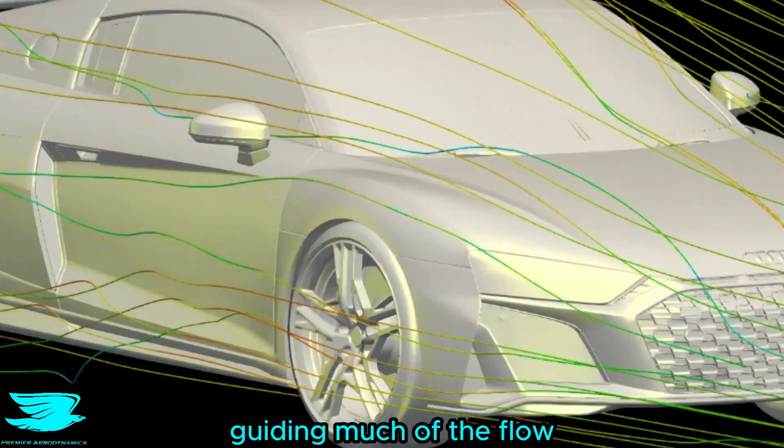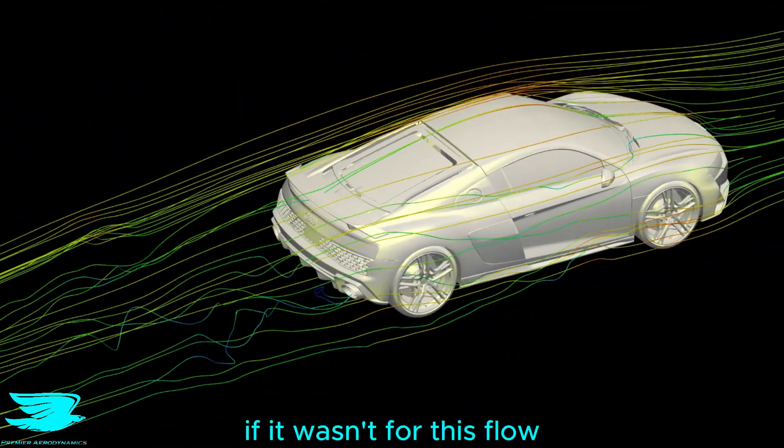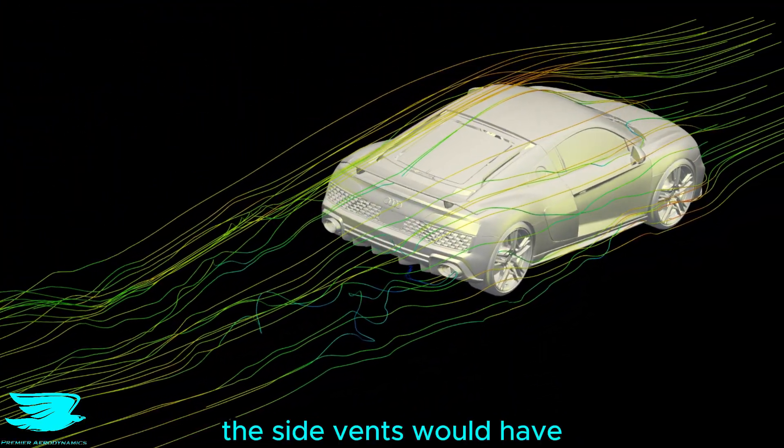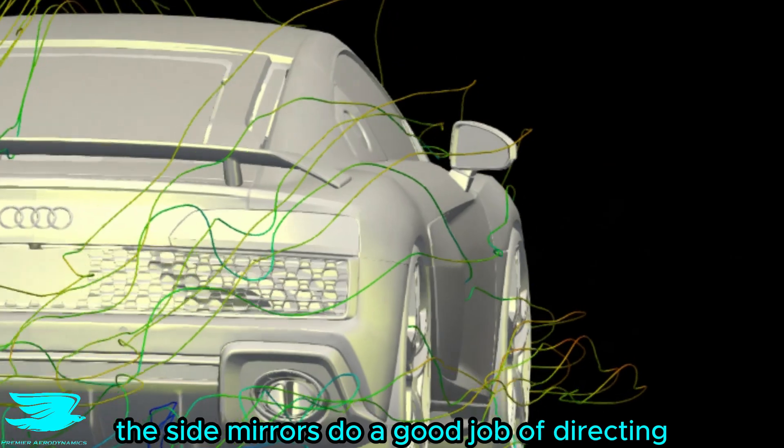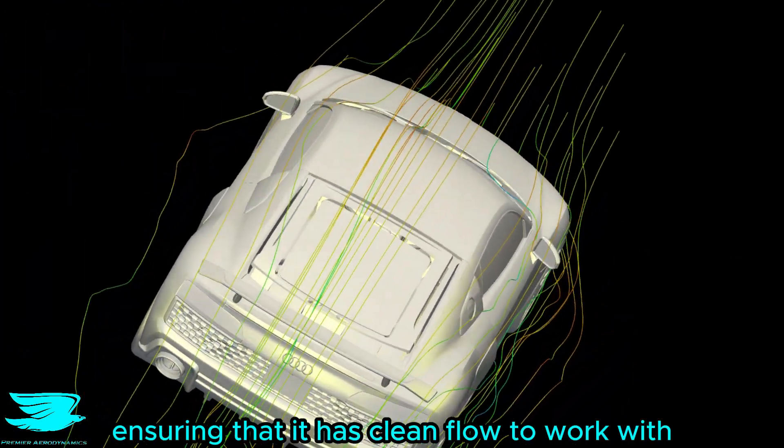The front wheel arches do a good job guiding much of the flow around the side of the car and getting into the side vents. If it wasn't for this flow, the side vents would have much lower energy flow entering. Incredibly, the side mirrors do a good job directing the flow to the rear wing, ensuring that it has clean flow to work with.